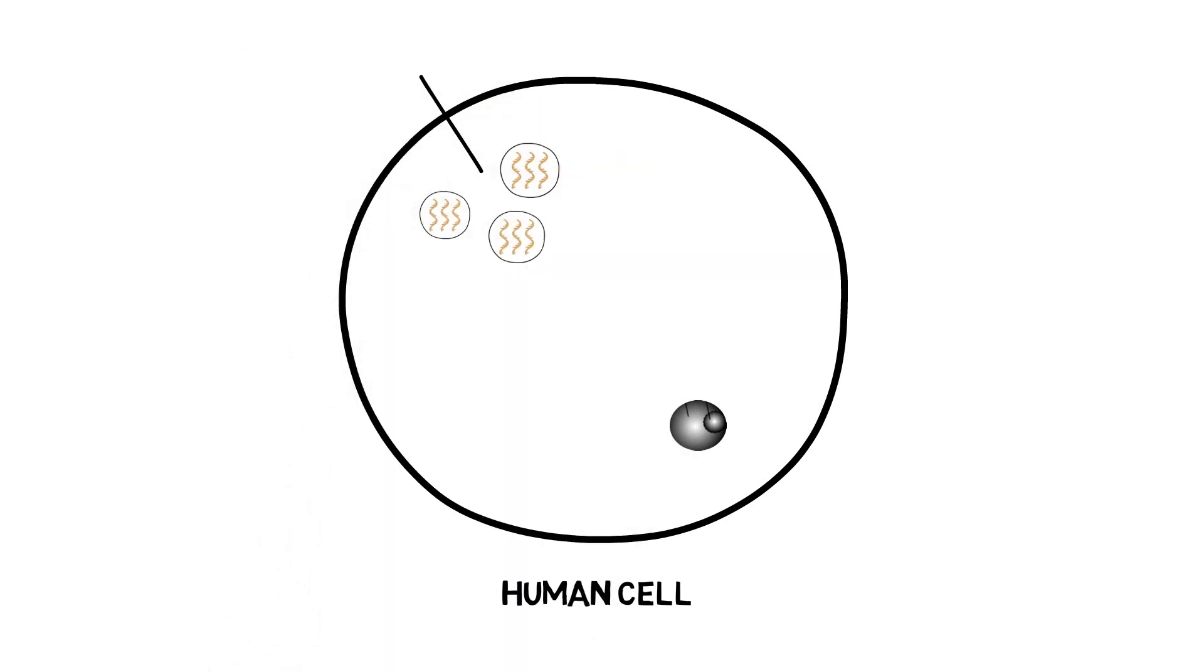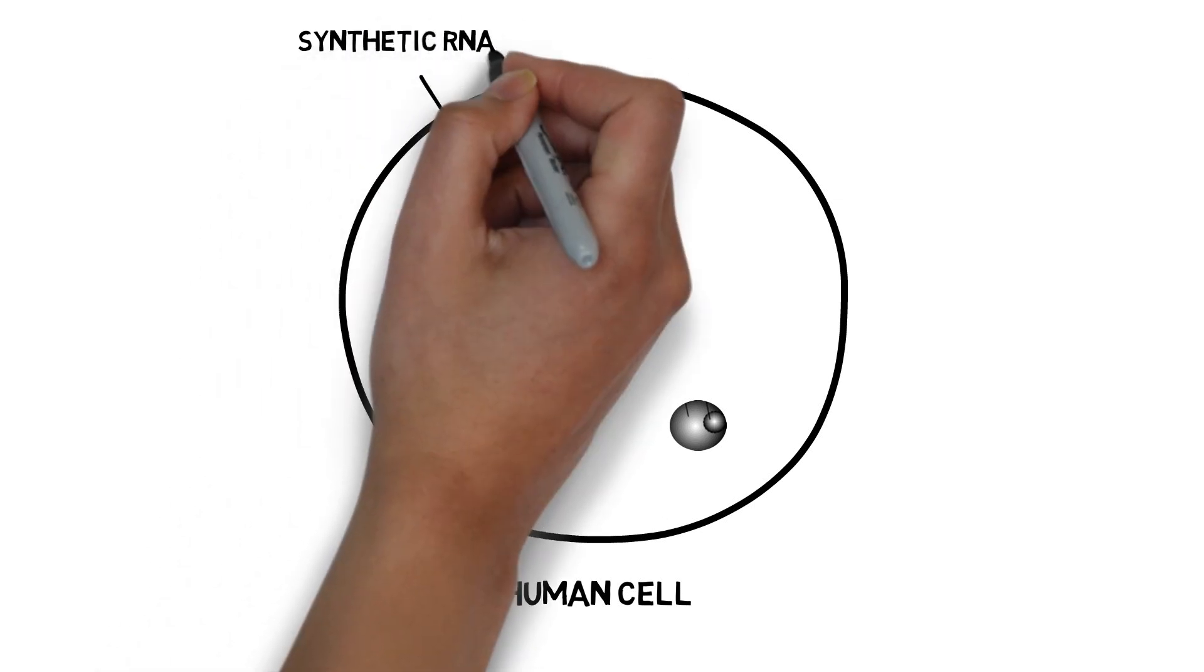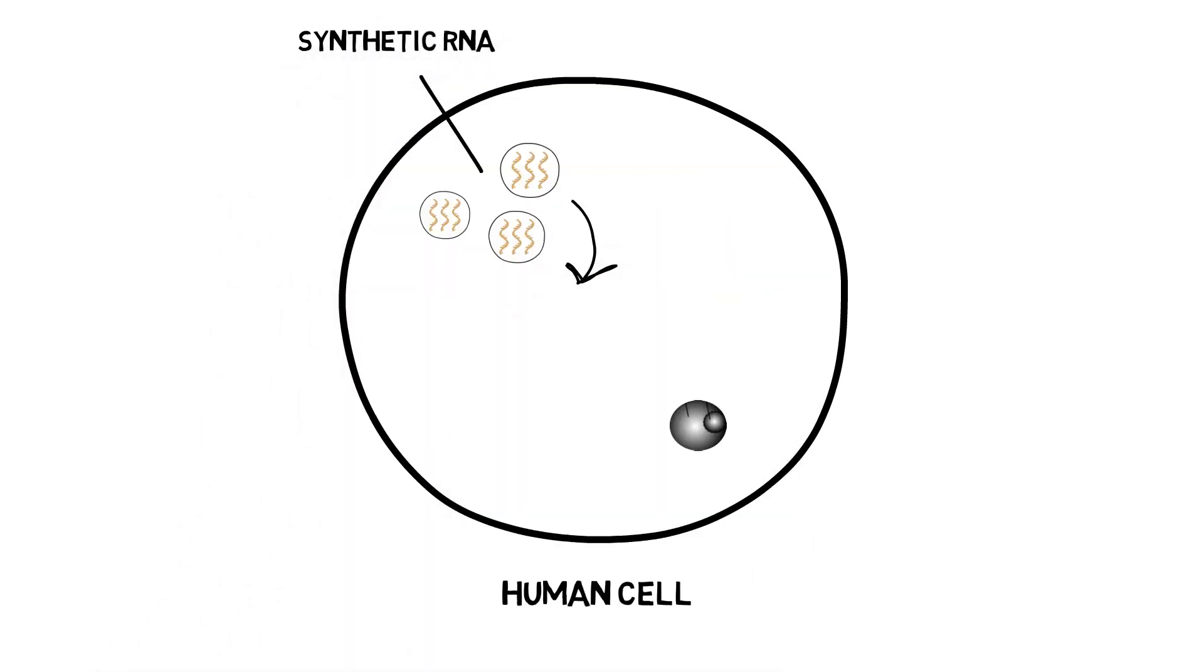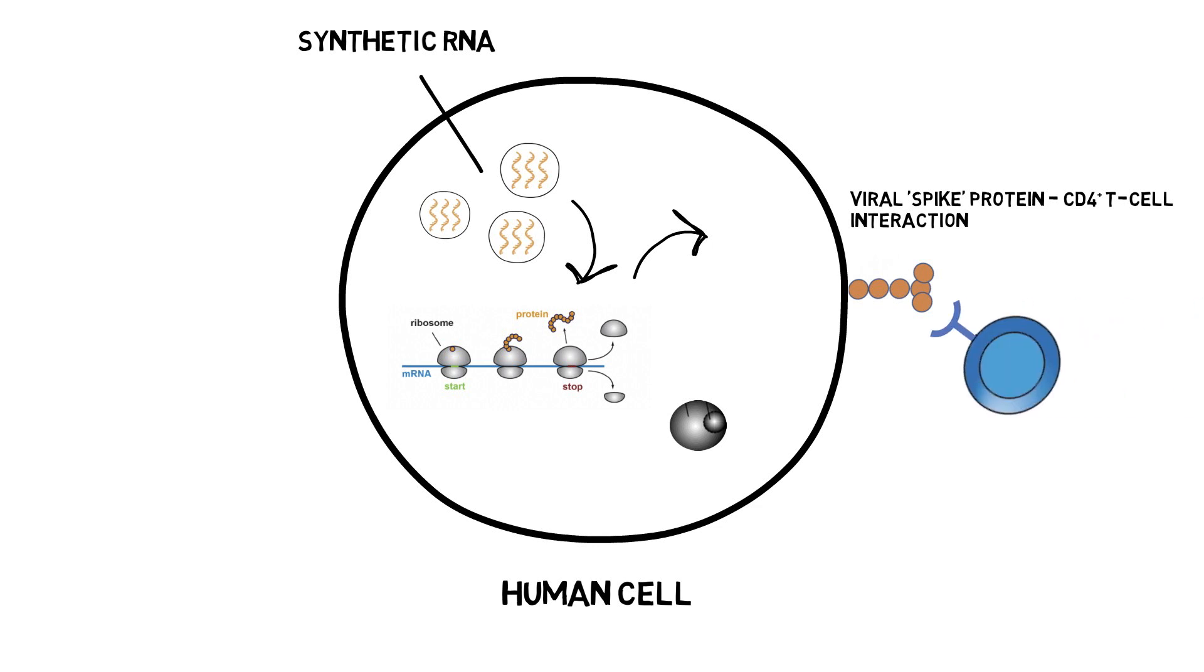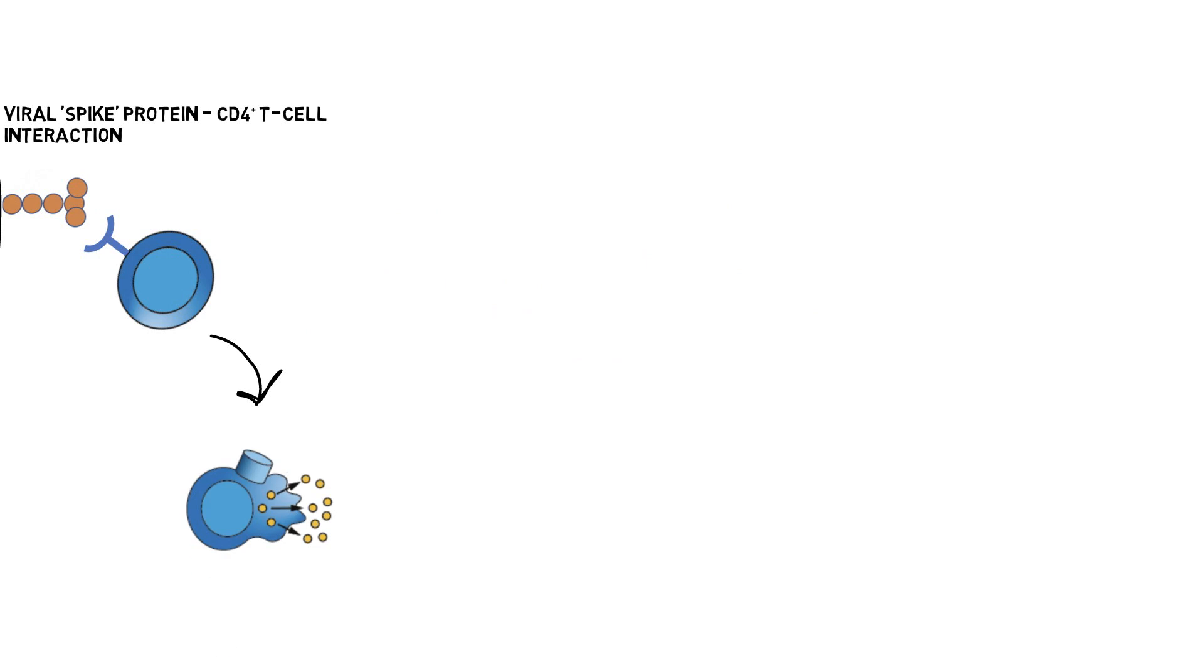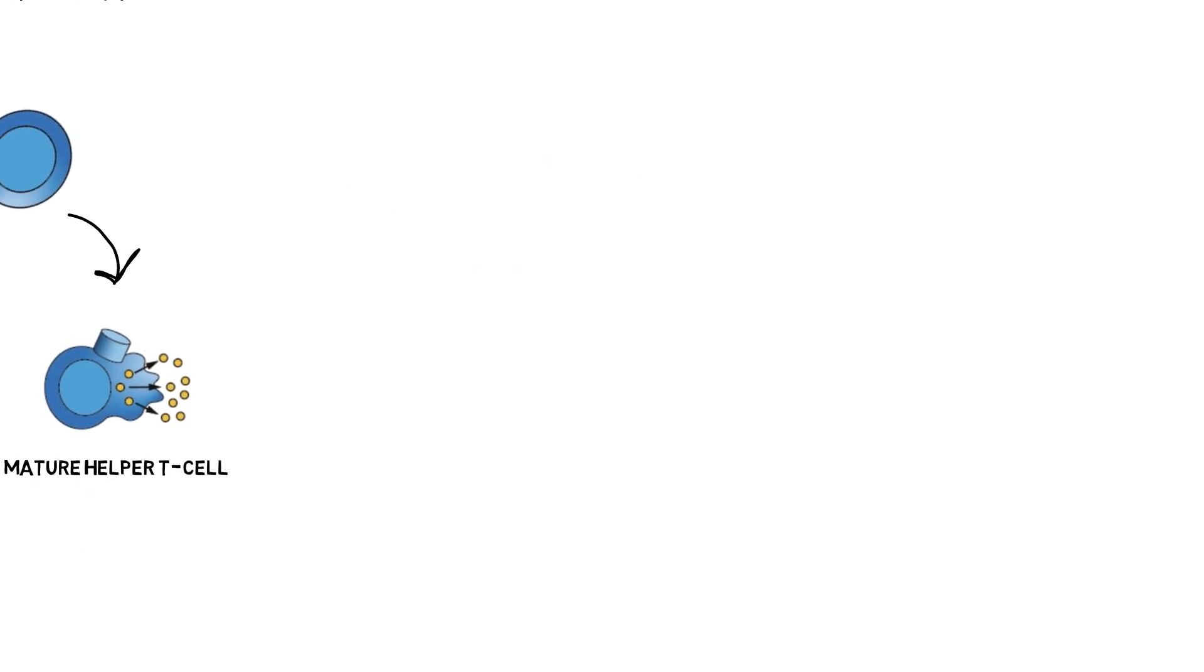Once a synthetic RNA enters one of our cells, the cell reads the instructions encoded by the RNA to produce the virus's spike protein. This is key, as this production then allows our cells to present this antigen to our immune cells, such as CD4-positive T cells, a specific type of T cell.